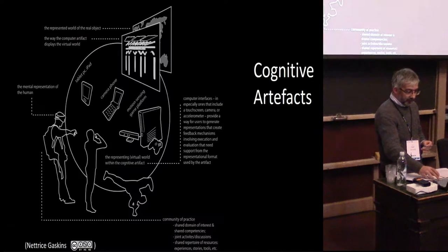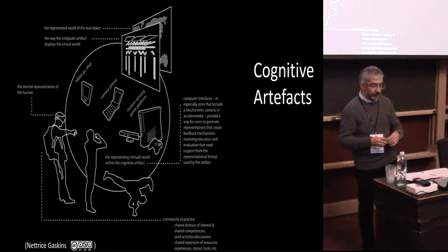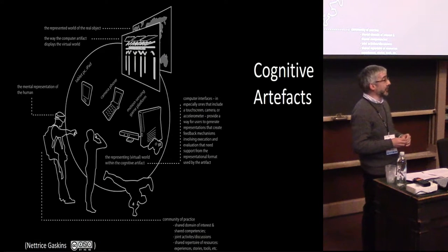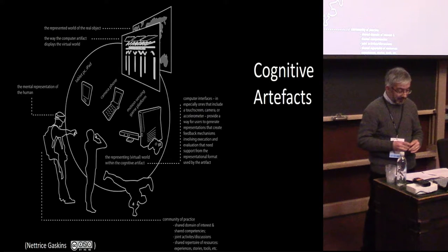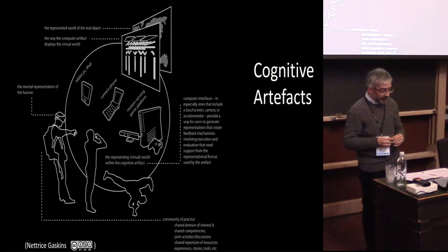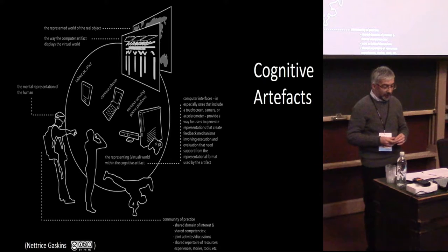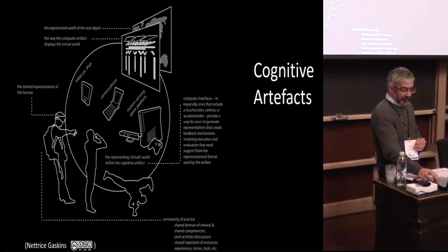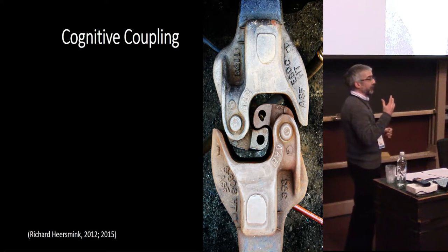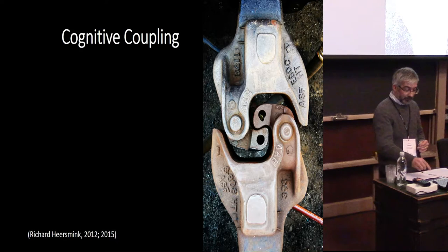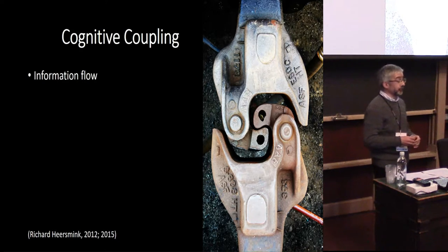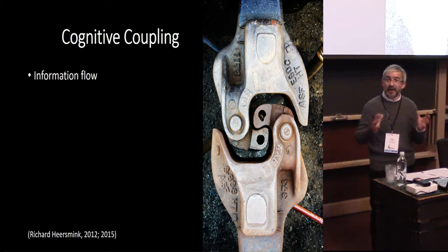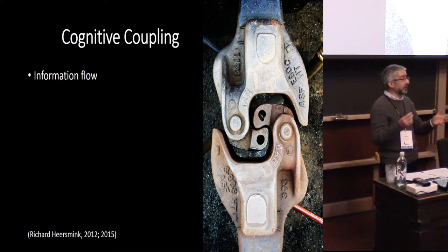Richard Hearsmink has recently talked about cognitive artifacts and defined a series of what he calls the dimensions of integration — cognitive coupling and cognitive decoupling — examining the relationships between human and artifact. These dimensions are defined in no particular order of priority. One dimension is information flow: thinking about the cognitive artifact and the relationship between it and ourselves as agents in terms of the flow of information.